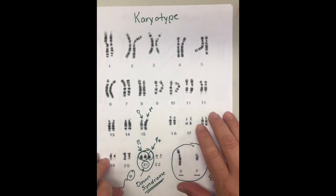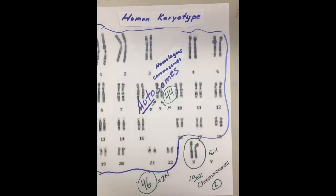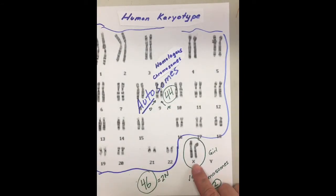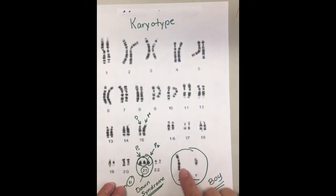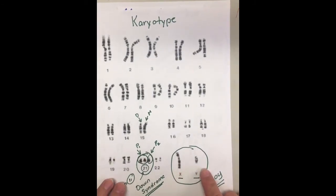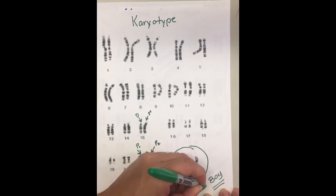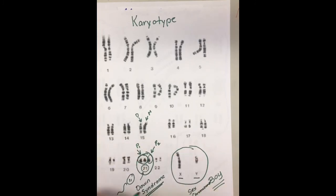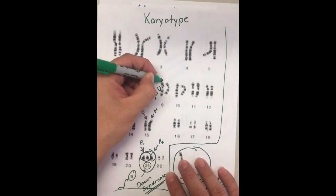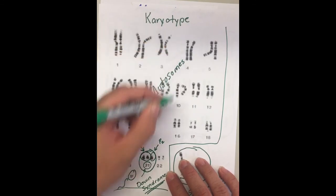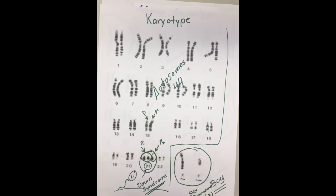Hopefully you now understand what a karyotype is a little better, and the difference between a boy and a girl. Girls have two X chromosomes; boys have an X and a Y chromosome. These are called sex chromosomes because they determine our gender. The rest of our chromosomes are called autosomes, for a grand total of 44 autosomes plus 2 sex chromosomes — 46 chromosomes altogether.